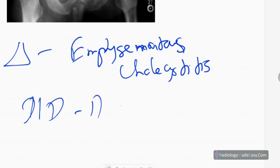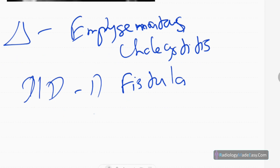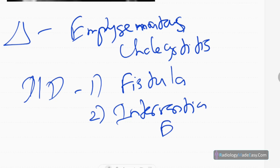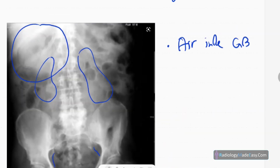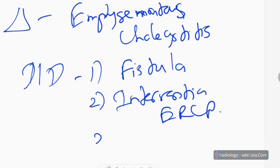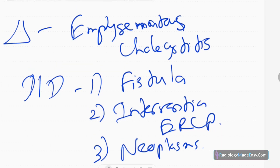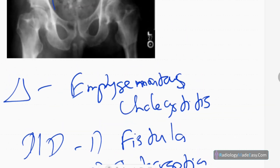The diagnosis is emphysematous cholecystitis. For the differential diagnosis, there can be fistula tracts — fistula formation due to gallstones — which can lead to the classic Rigler's triad of gallstone ileus. This is due to chronic cholecystitis. Previous interventions such as ERCP can also produce air within the biliary tree and gallbladder.